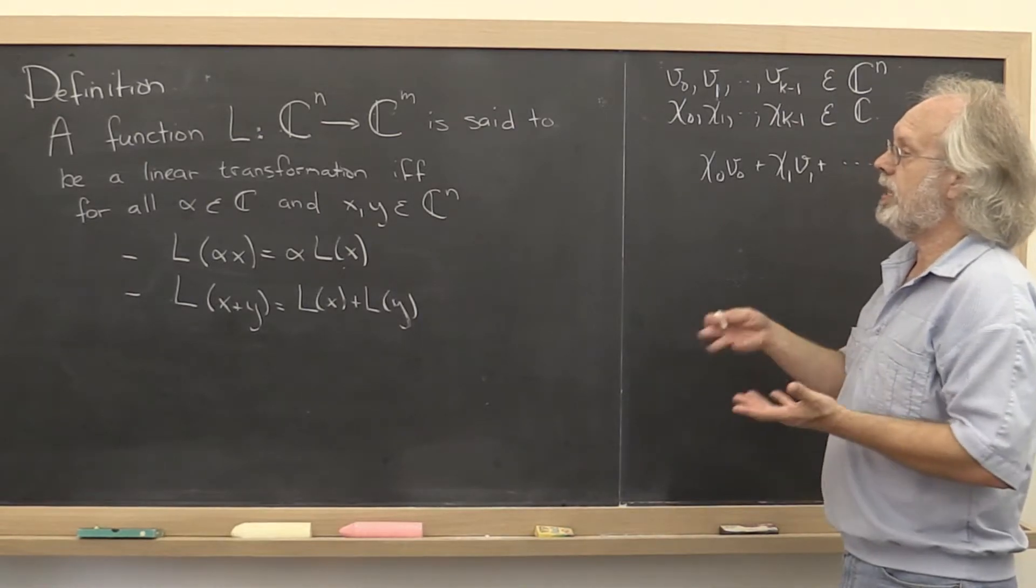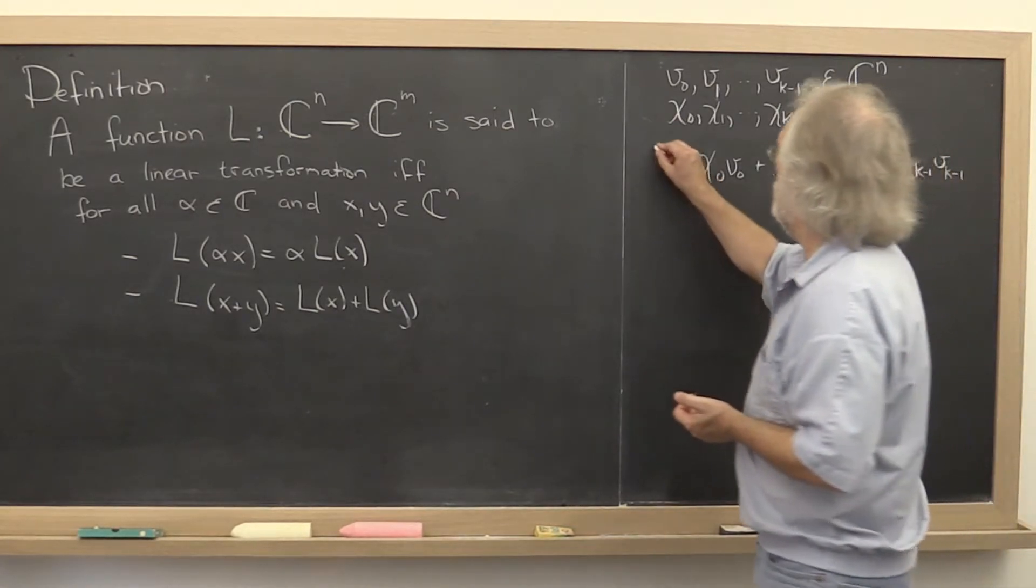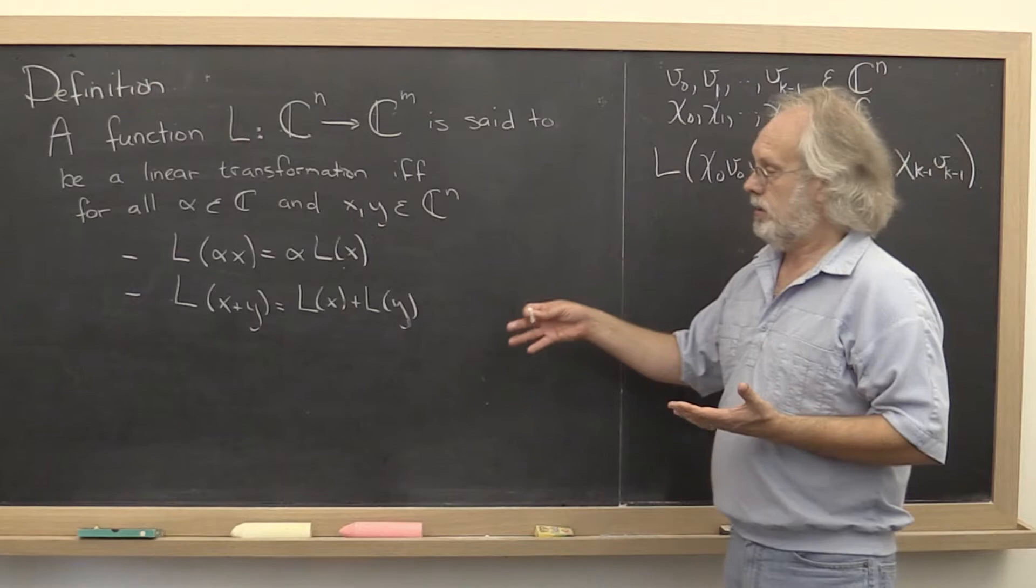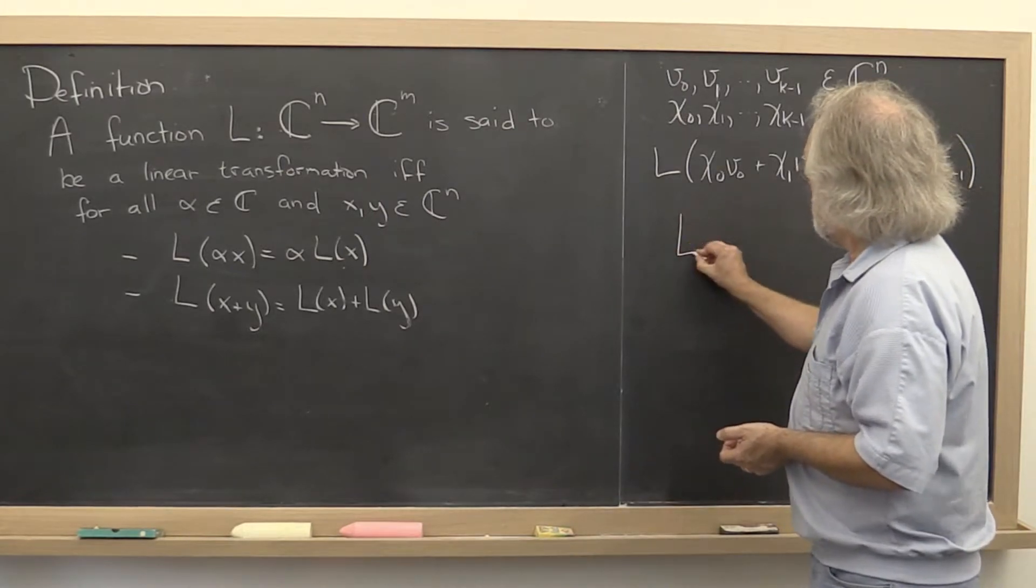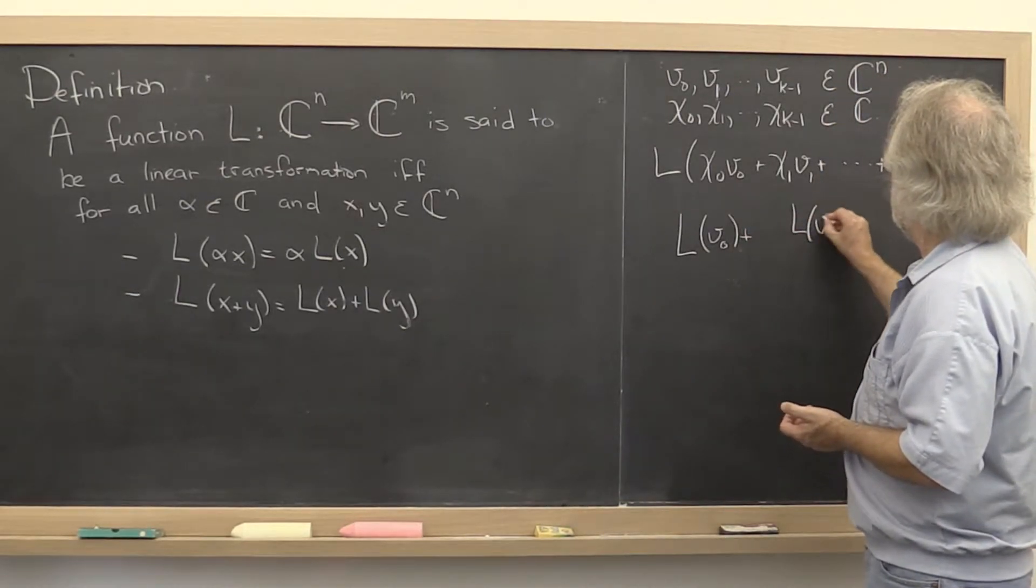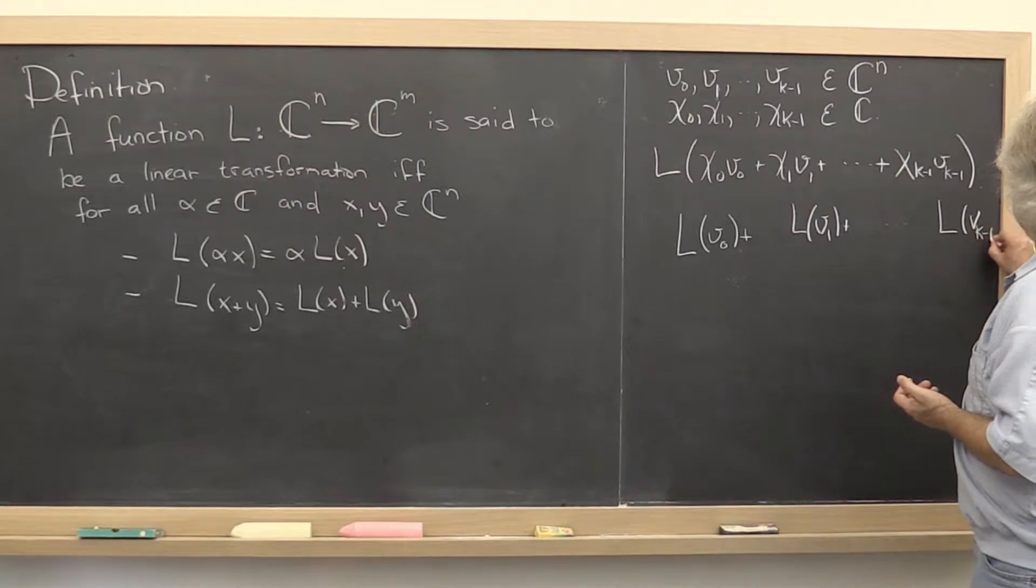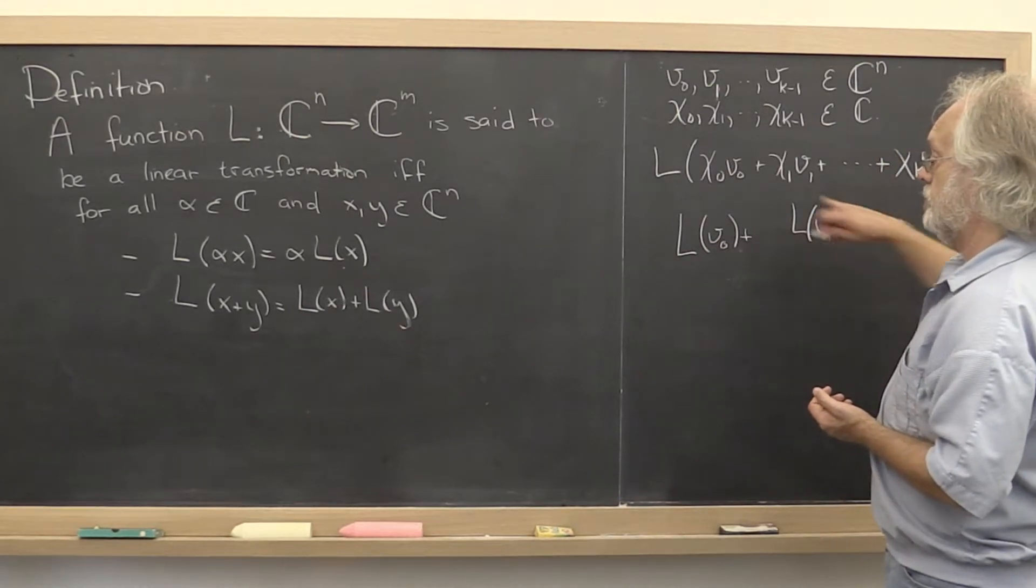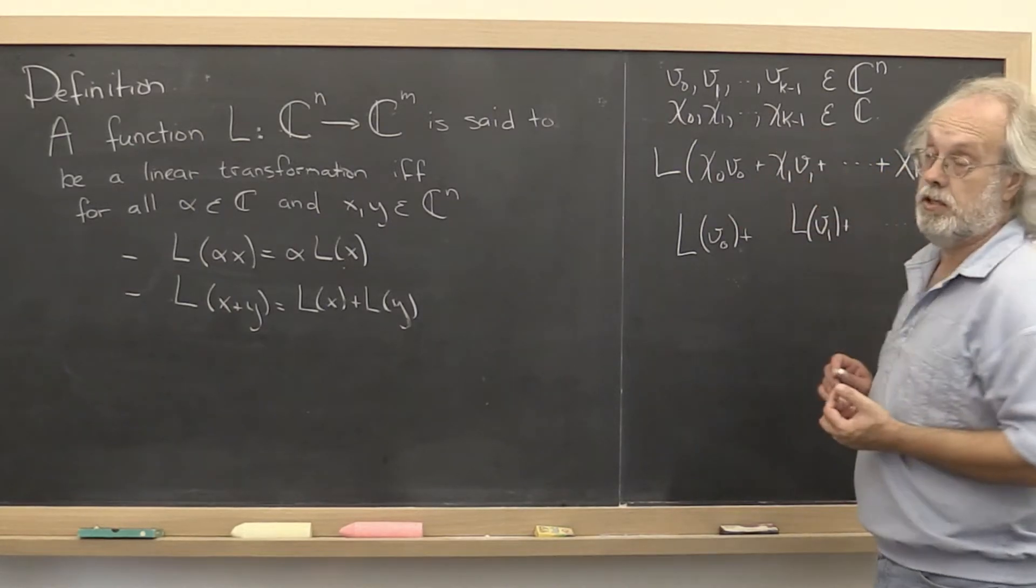Now what if we apply the linear transformation L to this linear combination of vectors? It's not hard to see that by applying these rules over and over again we get that we can apply the linear transformation to the individual vectors, and then take the linear combination of those vectors using the same scalars, the same coefficients as were used to create the linear transformation of the vectors.